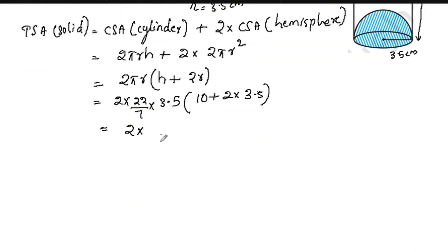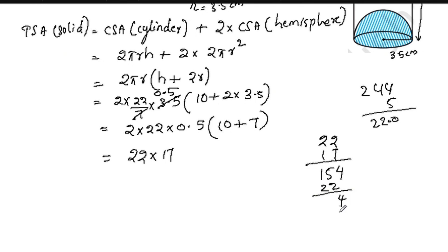Is equal to 2 times 22/7 times 3.5 times (10 + 2 times 3.5). This equals 22 times 0.5 times 20, which is 22 into 5 times 20. 22 into 17: 7 times 2 is 14 plus 1 is 22, 4 times 7 is 3. That's 374.